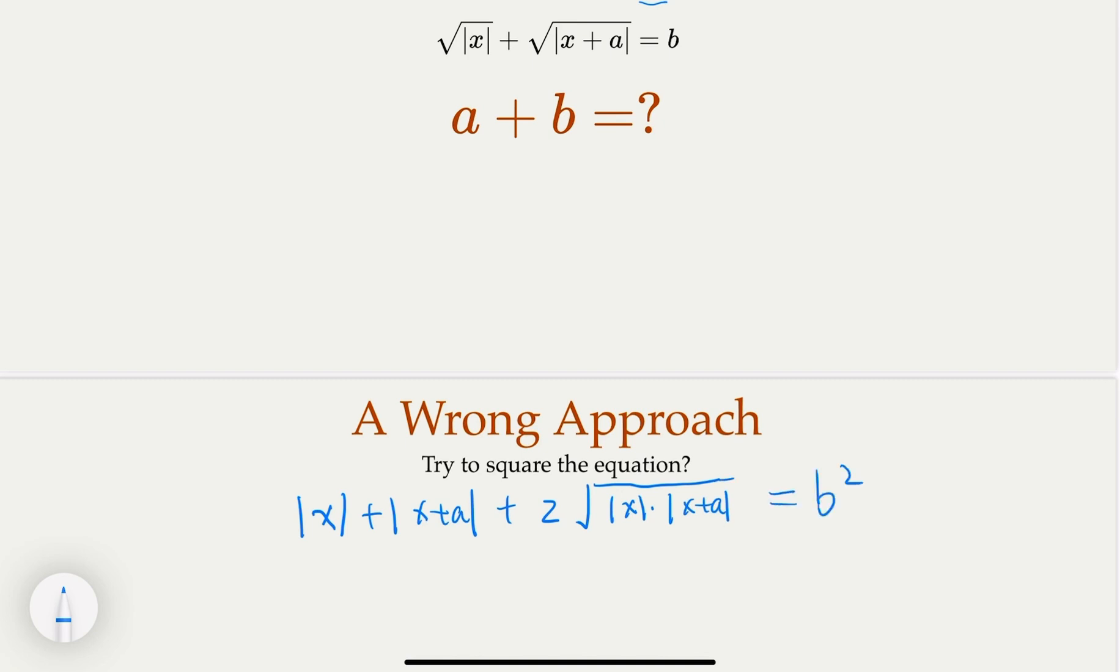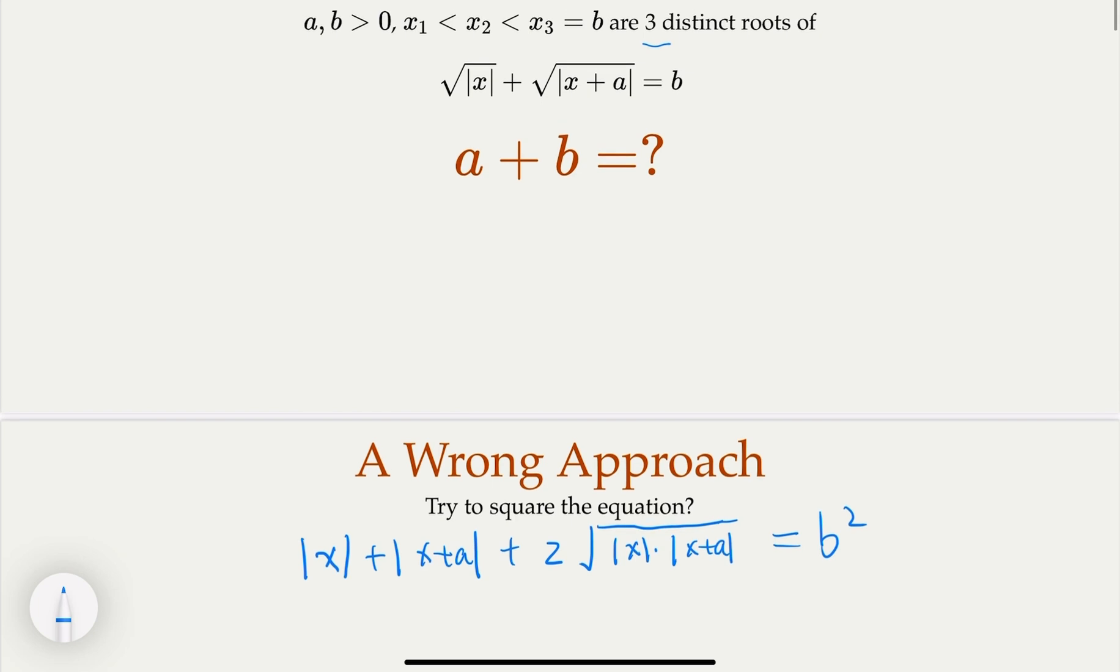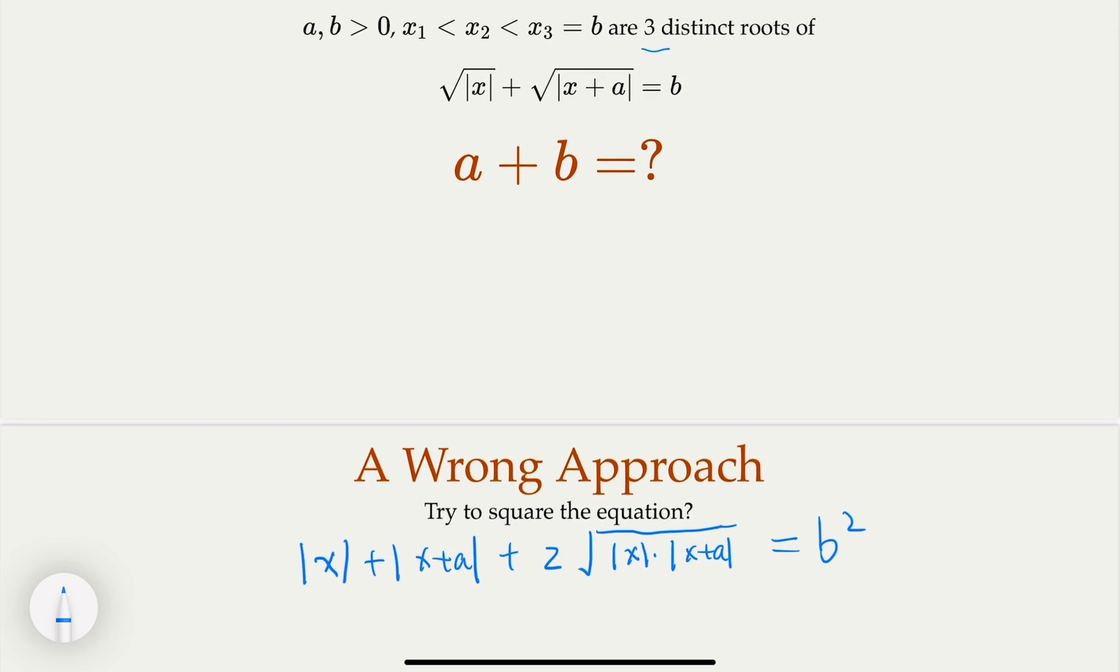Now, does this help you? Probably not because we still have square root and we still have absolute value. Not easy to deal with, wrong approach. Alright, so it turns out for this equation here, we want to do variable substitution to turn this equation to a better form.